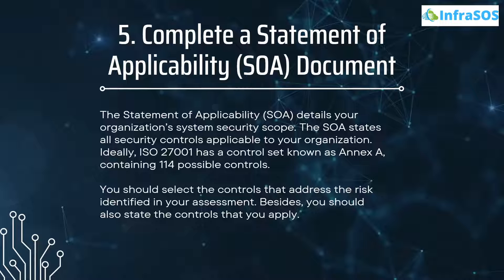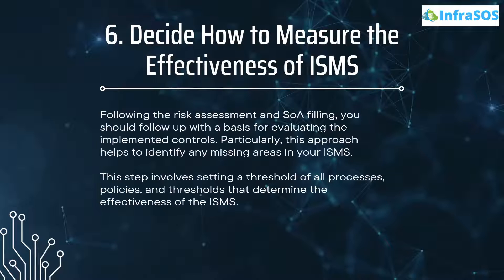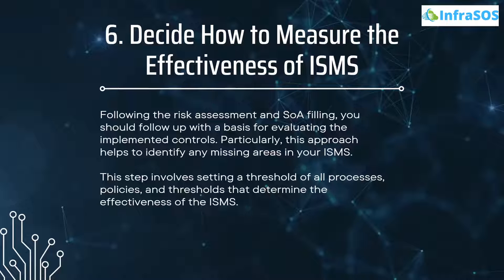Number six is deciding how to measure the effectiveness of the ISMS. Following the risk assessment and the SOA filing, you should establish a basis for evaluating the implemented controls. This approach helps you identify any missing areas in your ISMS. This step involves setting thresholds for all processes, policies, and metrics that determine the effectiveness of the ISMS.